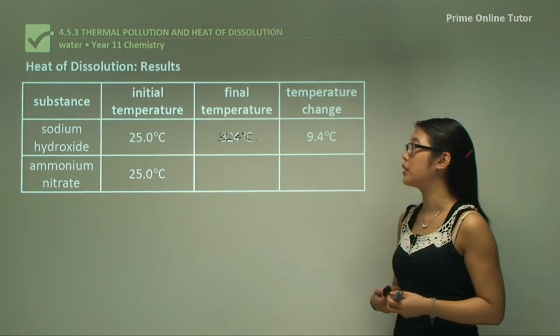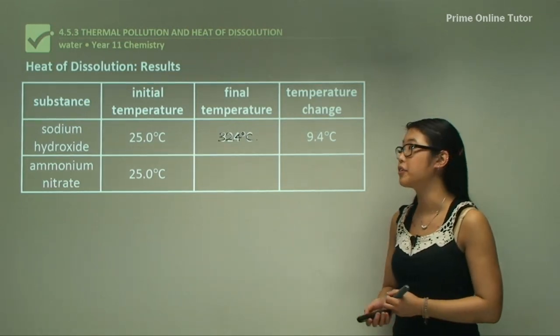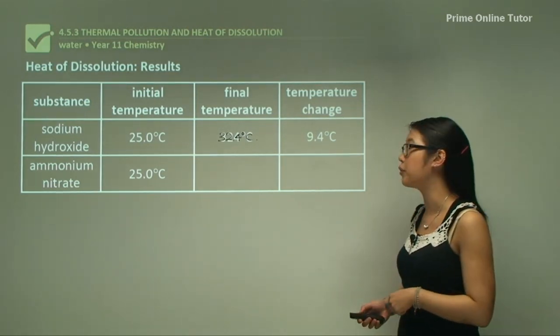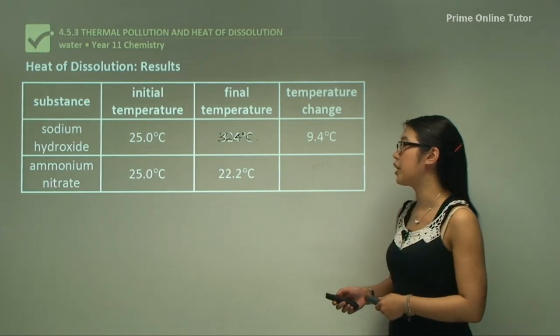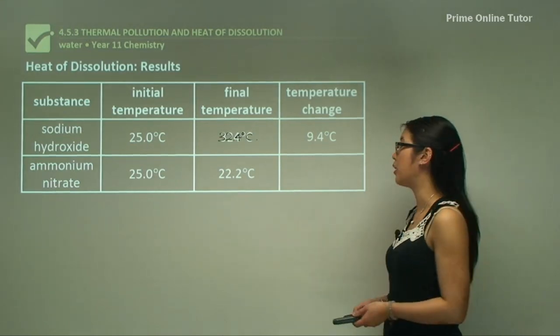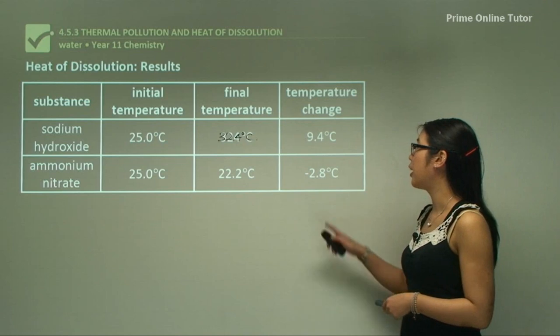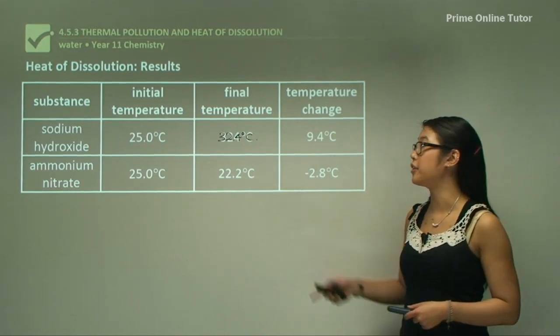For ammonium nitrate, the initial temperature is again 25 degrees Celsius because that's the temperature of the room, and then the temperature changes to 22.2 degrees. So we get a change of negative 2.8 degrees Celsius.